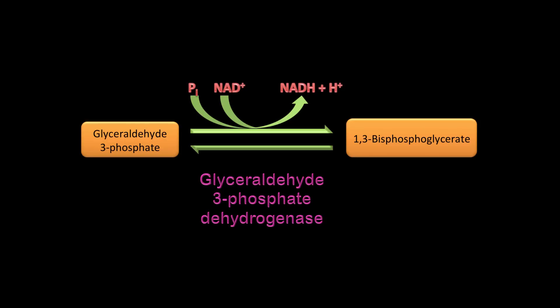Two types of reactions are occurring here. First, phosphate is being added to glyceraldehyde-3-phosphate — that is a phosphorylation reaction. Second, NAD+ is being converted to NADH + H+, which is an oxidation reaction. So you have both oxidation and phosphorylation taking place. In fact, this is the only step in glycolysis where oxidation occurs.